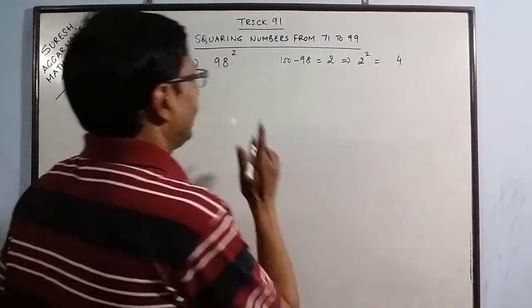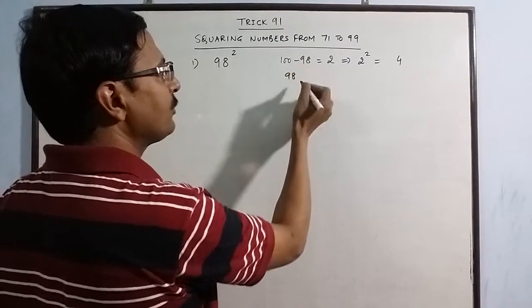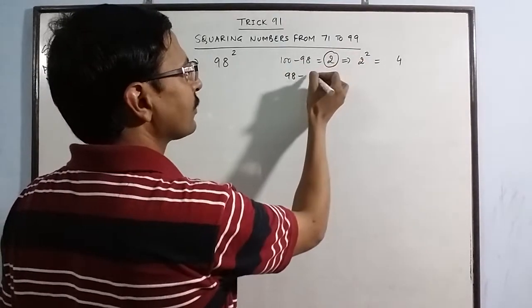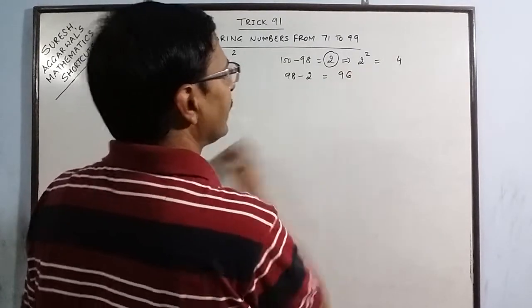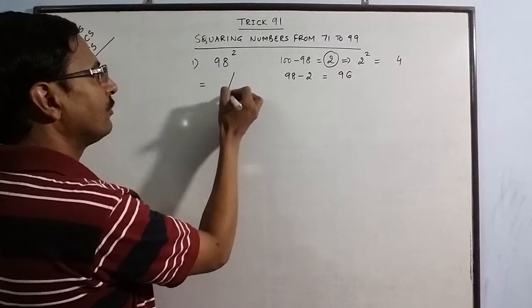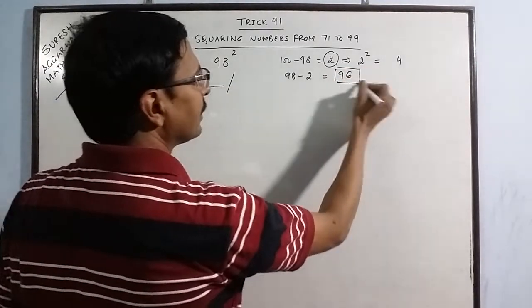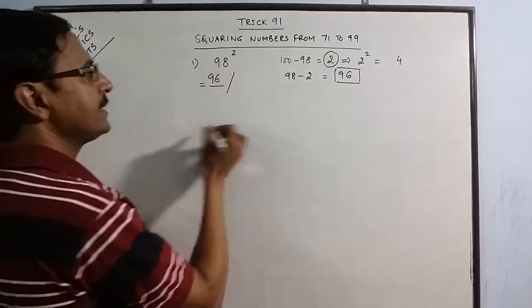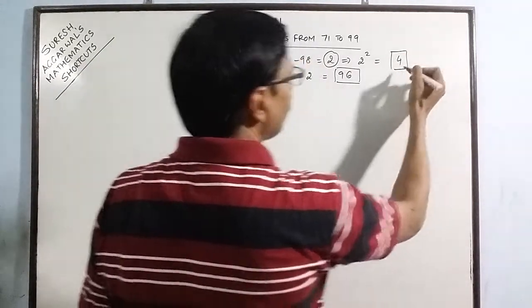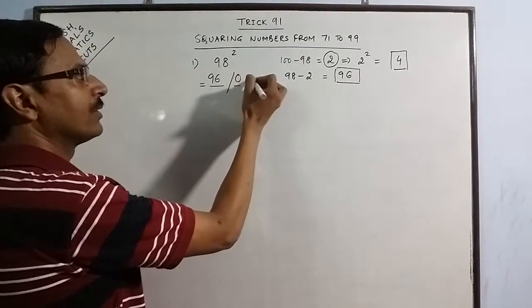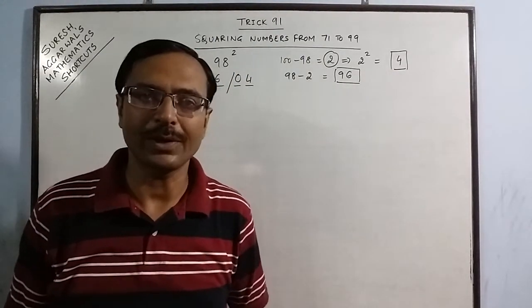Now this number 98, you have to subtract this difference from this number. In the second step you get 96 and your answer will have two parts. The first part will be this number 96 and the second part will have two digits but here we have only 4 so you write 04 which will give you the required answer. 9604 is the square of 98.